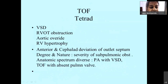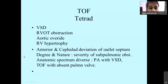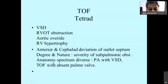Fallot's tetralogy consists of a VSD, right ventricular outflow tract obstruction, aortic override, and right ventricular hypertrophy. Basically, the outlet septum gets deviated anteriorly and cephalad, and the degree and nature of this deviation determines the severity of sub-pulmonic obstruction. There is a diverse anatomic spectrum ranging from pulmonary stenosis to pulmonary atresia to even absent pulmonary valve.